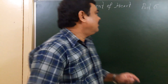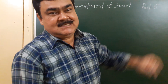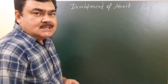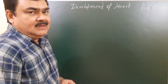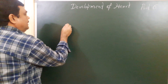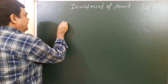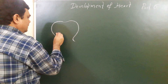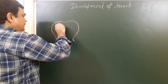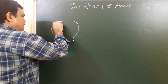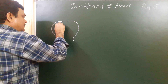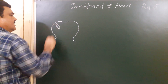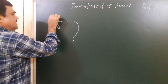Now we'll discuss the development of the heart, Part 6. In this part we'll discuss the absorption of sinus venosus. Here is the atrial chamber, this is the sino-atrial orifice, and here is septum spurium.